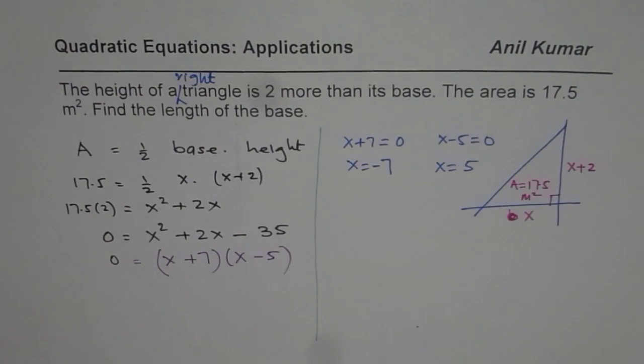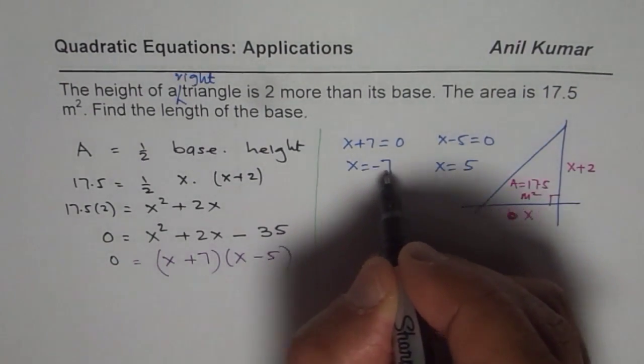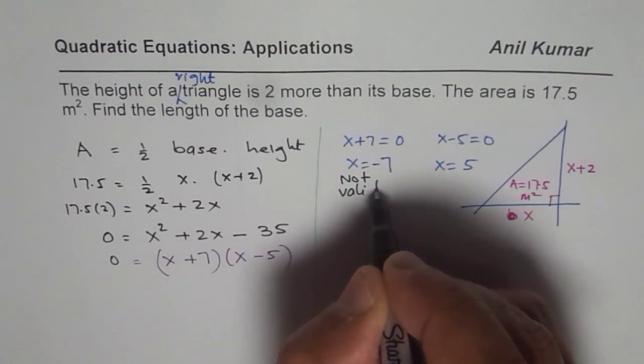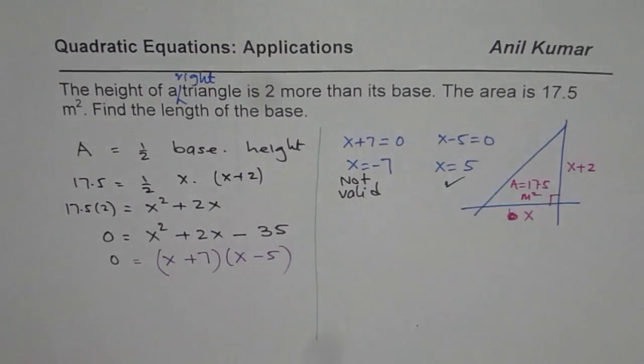Remember, we are talking about dimensions of a triangle—they cannot be negative. So that is not valid. x equals 5 is fine.